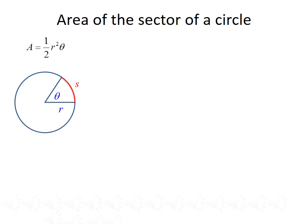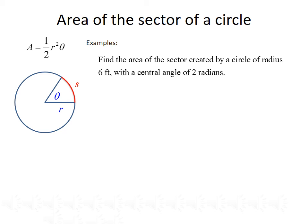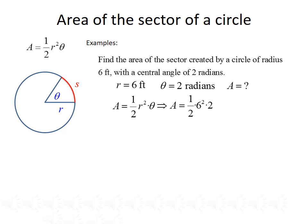The last thing we'll cover is finding the area of a sector of a circle. Using the same figure as before, the area surrounded by the angle and the arc — that wedge of the circle — is called a sector. The formula for the area of a sector is A equals one-half R squared theta. For example, find the area of the sector created by a circle of radius 6 feet with a central angle of 2 radians. R equals 6 feet, theta equals 2 radians. Plugging into A equals one-half R squared theta gives A equals one-half times 6 squared times 2, which simplifies to A equals 36 square feet.